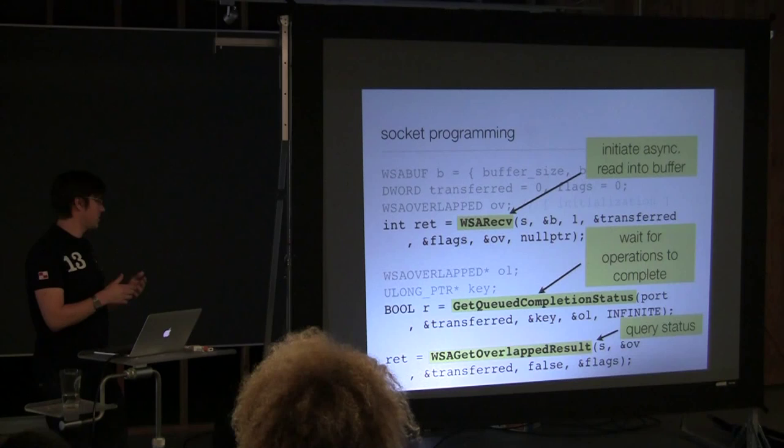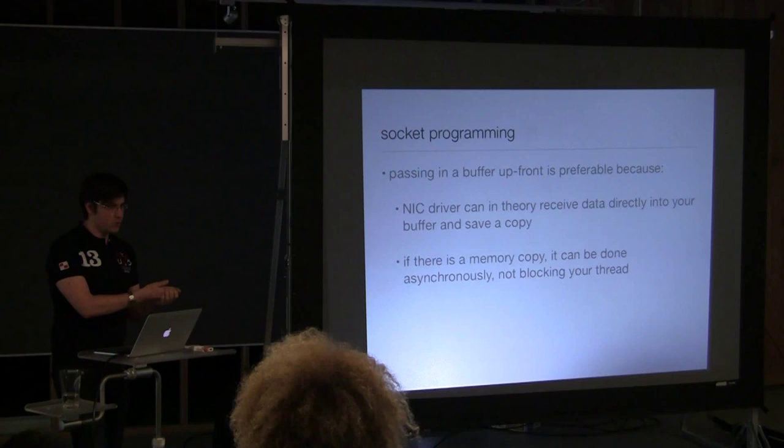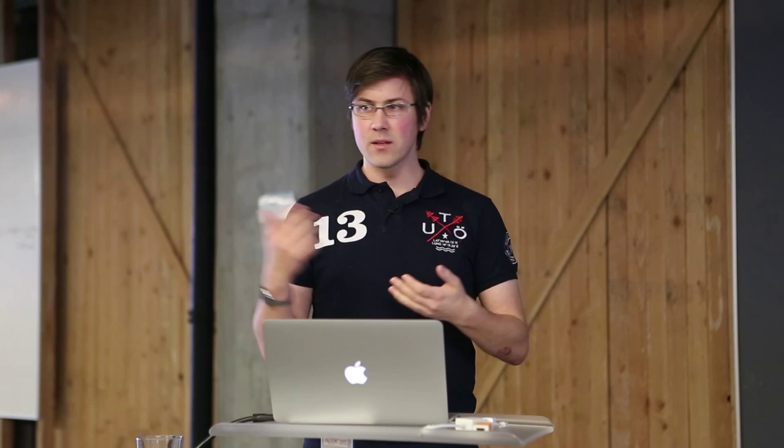So, passing in a buffer upfront is preferable because it has the potential of the stack below inside the kernel, the NIC driver and the kernel itself, to actually receive data directly into your buffer. So you save a copy. Even if that's not happening, you might need some fancy drivers and fancy hardware for that to actually happen. But even if that doesn't happen, you at least can do the memory copy asynchronously without your thread being blocked by anything. So your thread can still do other things while that copy's going on. And copying memory, you might say, is not that big of a deal. But when you're, say, transferring at 600 megabytes per second over a socket, it actually starts to matter.